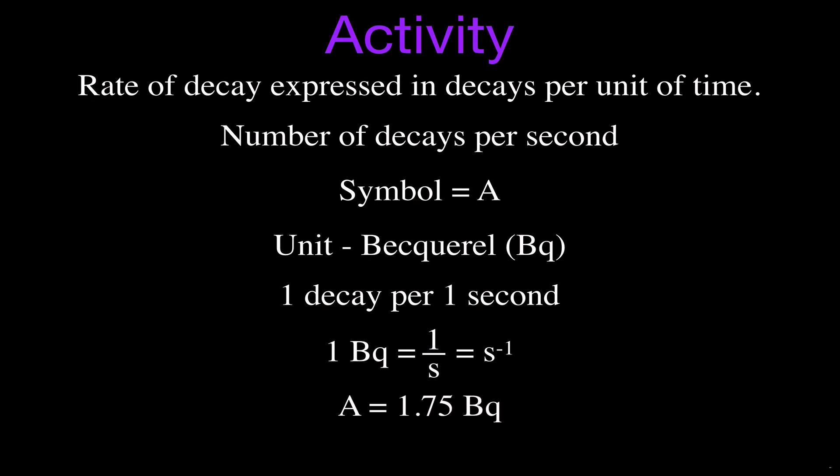So we could say that the activity of a sample is equal to 1.75 Becquerels. That means that on average, from your sample, you're getting 1.75 decays every second.